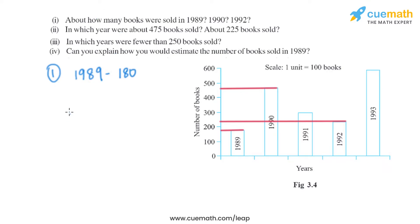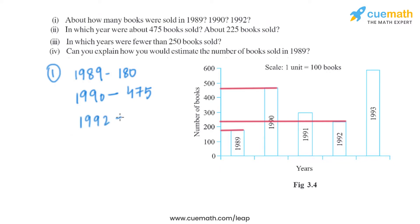Moving on to 1990, looking at the graph we can see that around 475 books were sold, as it is closer to 500. Now looking at 1992, it is close to 200, so we can say that approximately 225 books were sold in 1992.